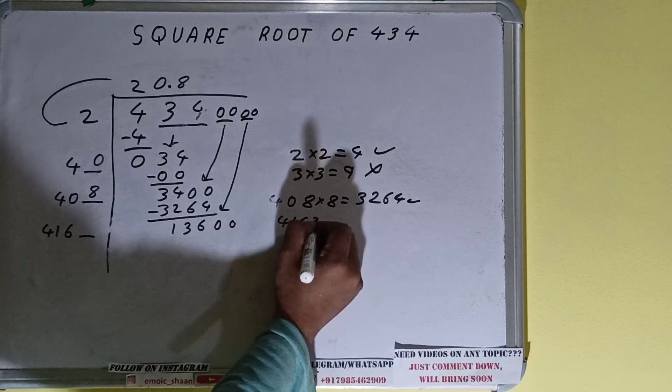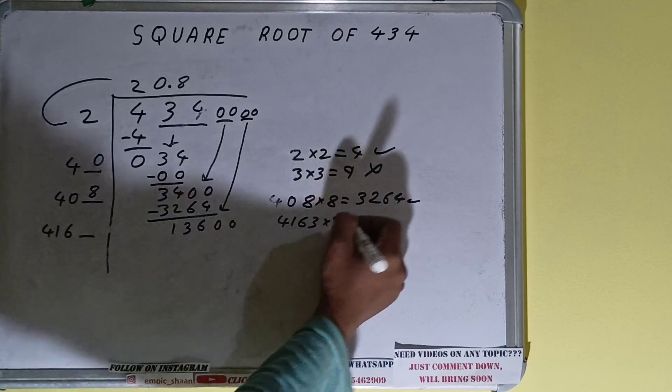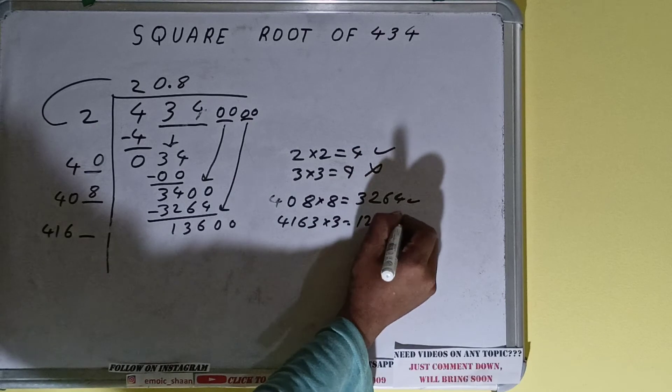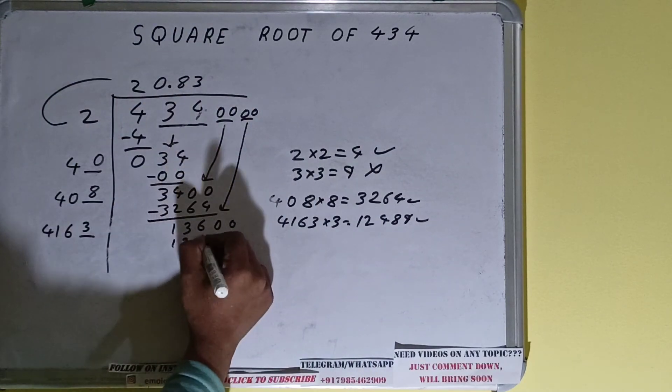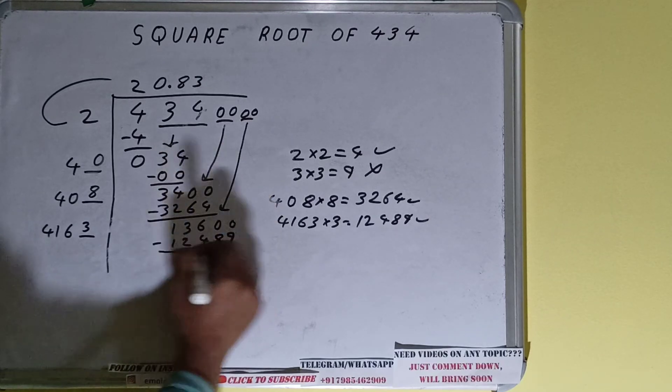So 4163 × 3 will be 12489, which is good to take. So 3 here and 3 here. 12489, subtract it.